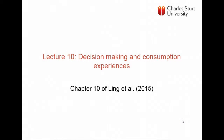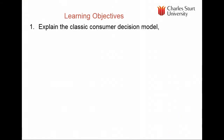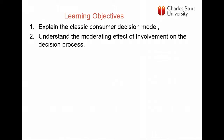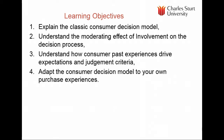Welcome to lecture 10 on decision making and consumption experiences. Our learning objectives today: explain the classic consumer decision model, which is a hierarchical process from problem recognition, information search, evaluation of alternatives, purchase, and post-purchase evaluation. We'll also look at the moderating effect of involvement and how consumers' past experiences drive expectations and judgment criteria, and how this applies to modelling your own purchase experiences.